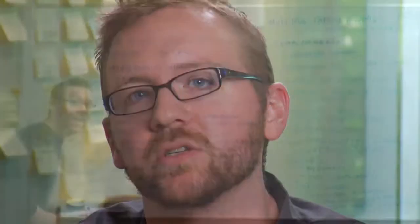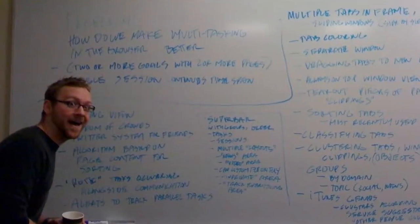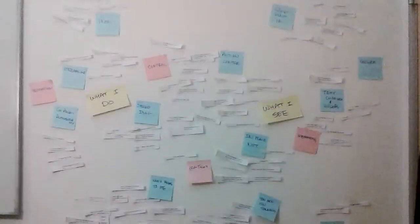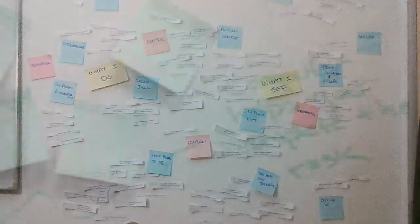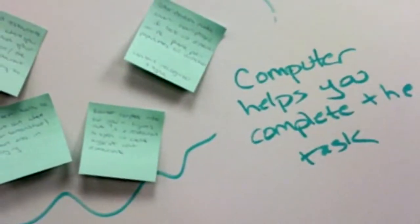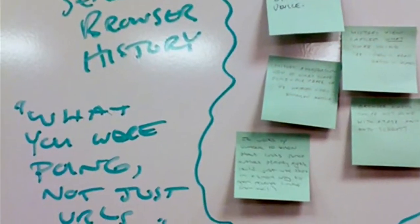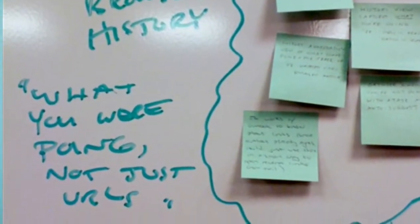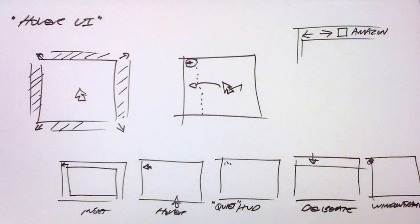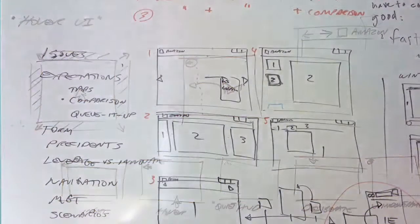We like to use the term data-informed decision-making, in that data is just one of the inputs that goes into any kind of decision that we're going to make about any of our products. It's a very iterative process. We first start off with establishing goals and working through lots of different prototypes to see how each achieves those goals and weighing the different prototypes.